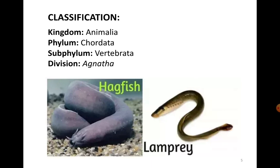These Agnathans are classified into two classes: Ostracodermi and Cyclostomata. Cyclostomata includes Petromyzon and Myxine — the lampreys and the hagfishes — which are the living forms. Whereas the other class, Ostracodermi, represents the extinct or fossil forms.